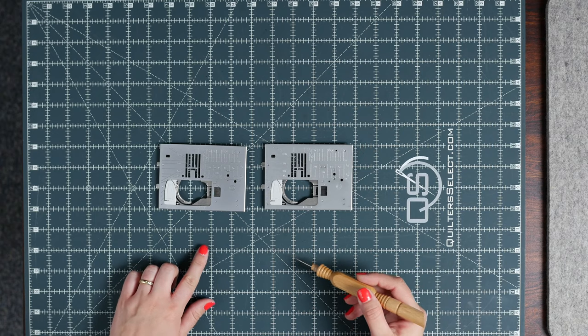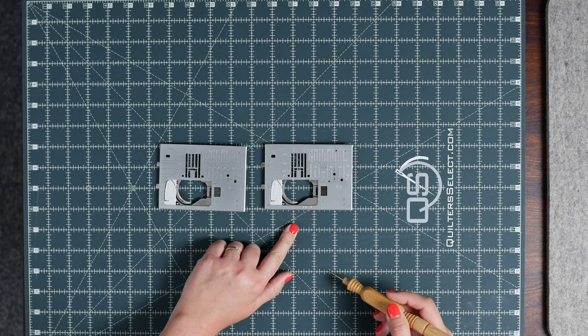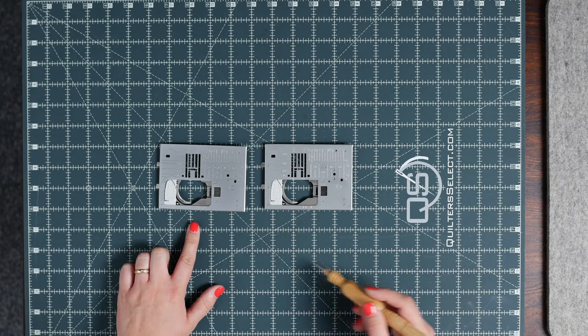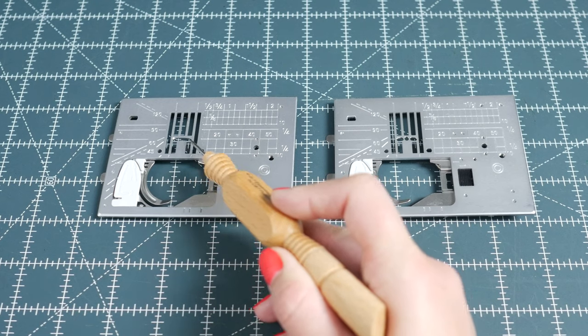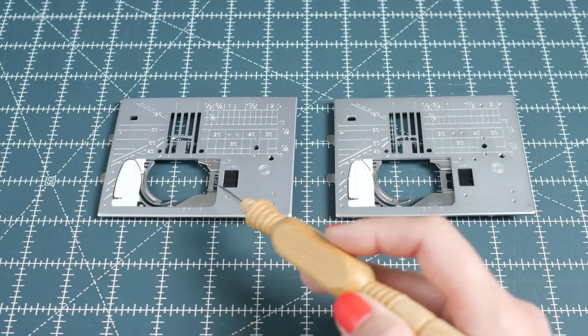To understand this better, I want to show you the standard needle plate next to the straight stitch plate. So on the standard needle plate you've got a wide opening. This will allow you to do a variety of stitches where your needle will have the ability to go back and forth.